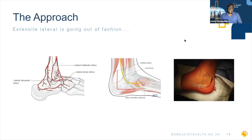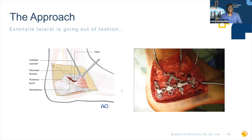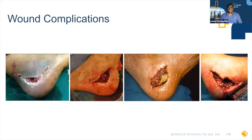The extensile lateral approach is really going — or has gone — out of fashion. If you put your incision far enough lateral and plantar, you miss the sural nerve, the peroneals, and the lateral calcaneal artery supplying the whole lateral wall. You get a great view of everything: a full-thickness flap with blood supply, the whole side of the calcaneum, the subtalar joint, and you can place a beautiful plate. But the problem is wound complications — and when they happen, they can be a disaster, quickly going from small holes to rather large holes with metalwork showing.